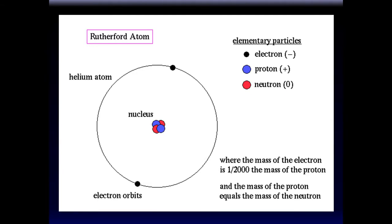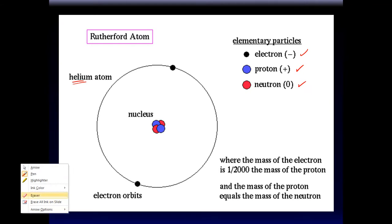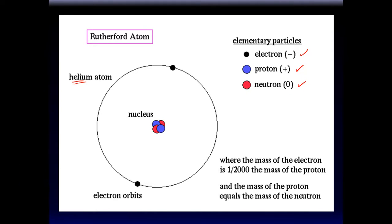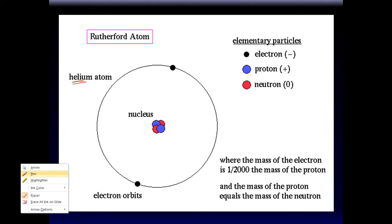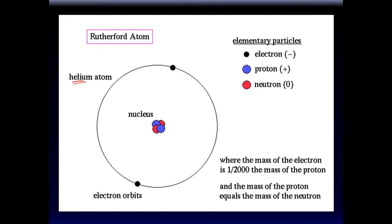As you probably know, the nucleus contains protons and neutrons, and electrons orbit or fly around the nucleus. This is an example of a helium atom — it has two protons and two neutrons. A proton has a positive charge and an electron has a negative charge.